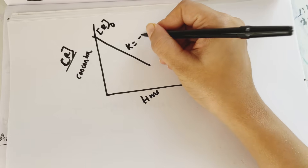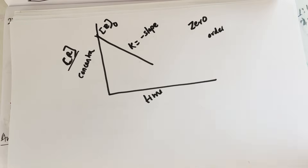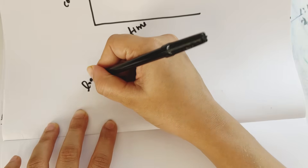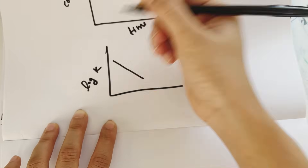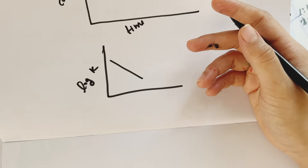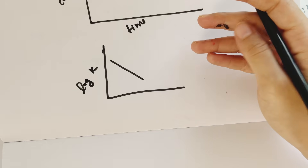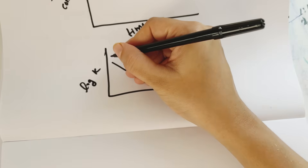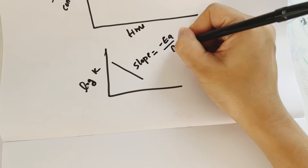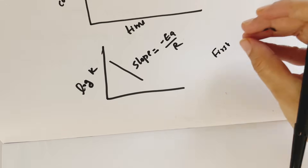From the graph, K equals minus slope. This is a zero order reaction. But here, if log concentration is plotted, log R equals log R0 minus Kt — this is a first order reaction. The slope is equal to minus Ea by R.